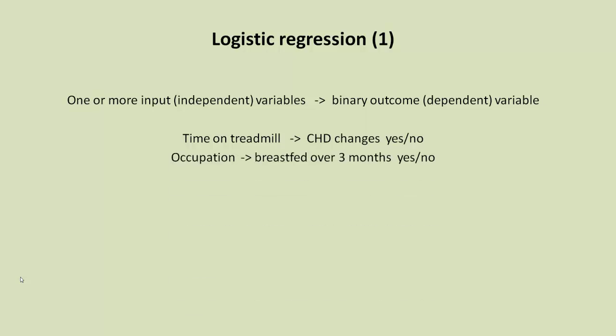This is an example where we have occupation. So we might have two or more occupations, and then we find out which occupations breastfed beyond three months or not. So we just class that as a binary outcome variable, yes or no, did they breastfeed beyond three months.